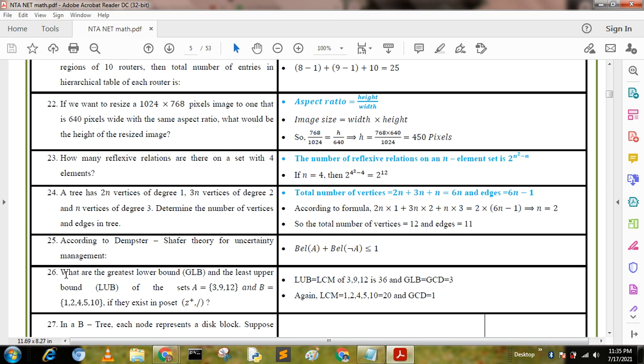Next question: What are the greatest lower bound and the least upper bound of the set A = {3, 9, 12} and B = {1, 2, 4, 5, 10} if ordered by divisibility? According to the formula, greatest lower bound equals GCD and least upper bound equals LCM. LCM of 3, 9, 12 equals 36, and LCM of 1, 2, 4, 5, 10 equals 20. GCD equals 1.